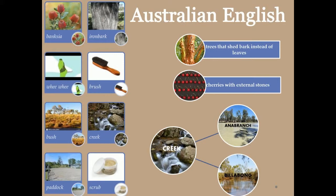The giant kingfisher with its raucous bray was long referred to as a laughing jackass, later as a bushman's clock, but now it is a kookaburra. Cattle so intractable that only roping could control them were said to be ropeable, a term now used as a synonym for angry or extremely annoyed.